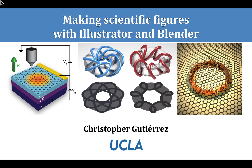Illustrator is a vector-based program for making graphic art like the image I made here on the left. It uses a paid subscription model, so check your school or institute for an academic license. Blender is a powerful 3D computer graphics program for making really stunning 3D images like the two images I made on the right. Blender is free and open source and can be found in the link below.